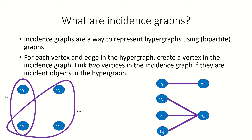If you recall, vertices are only incident to edges, and edges are only incident to vertices. So the set of vertices in the incidence graph that correspond to edges, and the set of vertices that correspond to vertices, are independent sets, which reveals that our incidence graph is a bipartite graph.